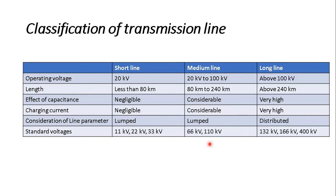For long transmission lines, the operating voltage is more than 100 kV and the line length is more than 240 km. The effect of capacitance is very high, leading to a very high charging current. The parameters must be treated as distributed parameters. Standard voltages for long transmission lines are 132 kV, 166 kV, and 400 kV; 765 kV can also be considered.